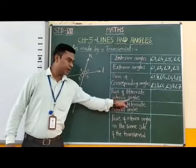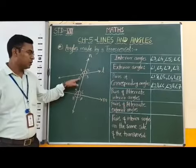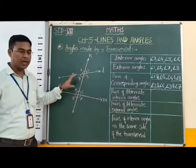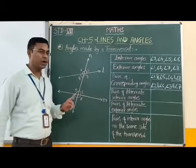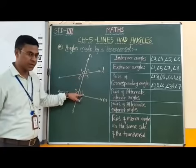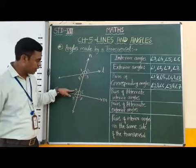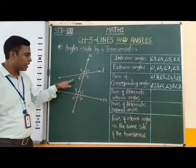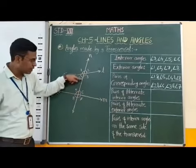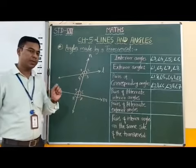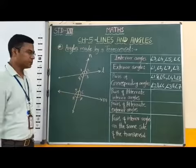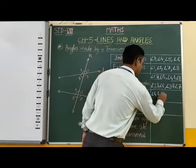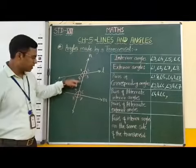Next, pairs of alternate interior angles. Angle 3, angle 4, angle 5 and angle 6 are the interior angles. Among these interior angles, angle 4 and angle 6, and angle 3 and angle 5 are the pairs of alternate interior angles. Therefore we write: angle 4 and angle 6, and angle 3 and angle 5.